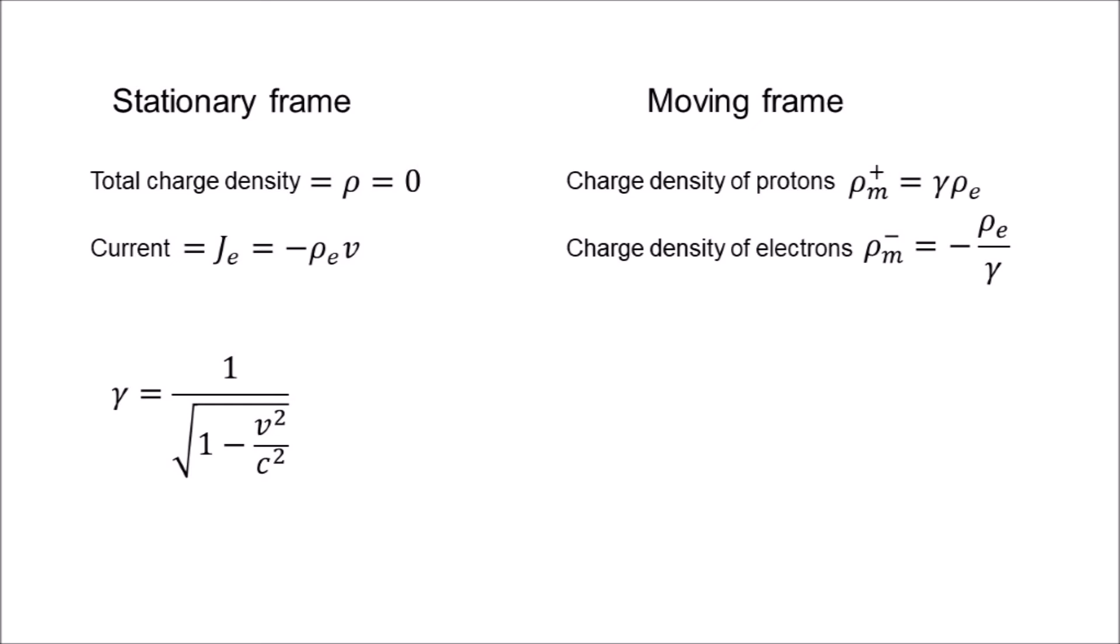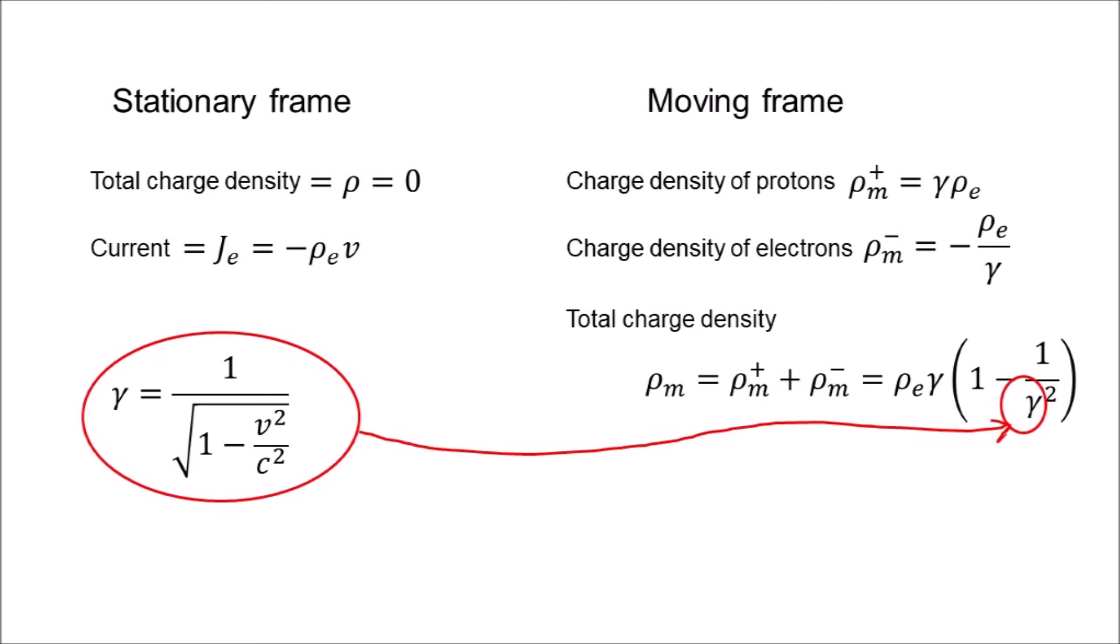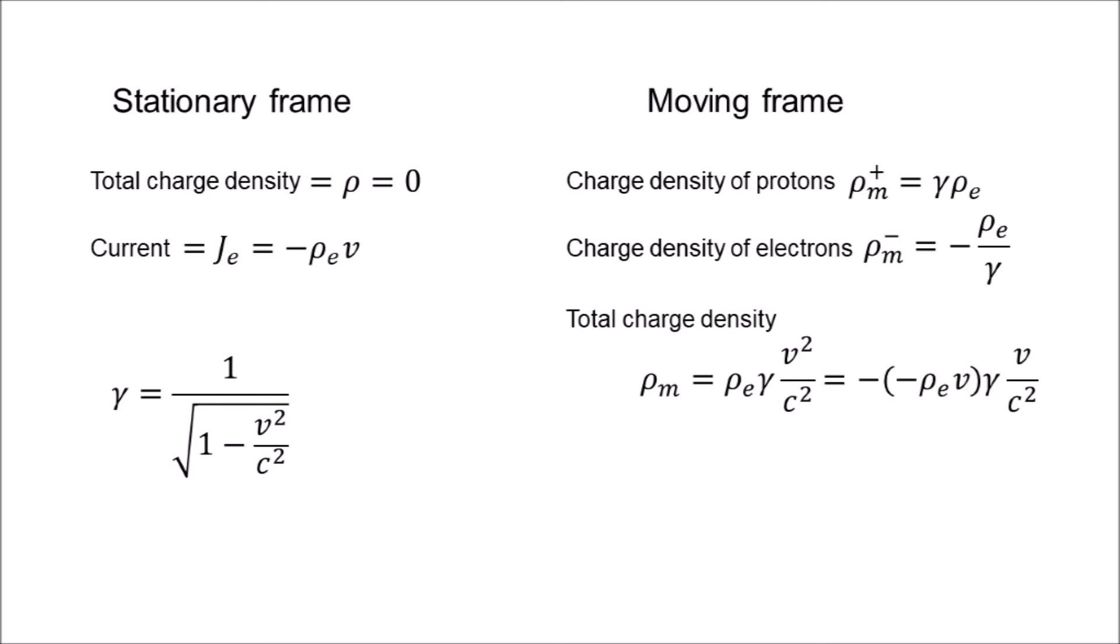So, the total charge density in the moving frame is this. Plugging in gamma, we end up with this simple expression. We can also write it in terms of the electron current, as measured in the stationary frame.